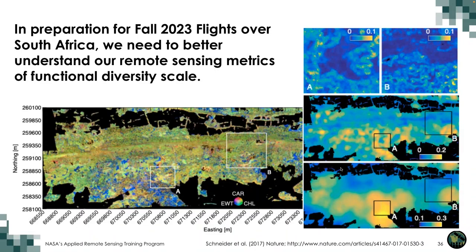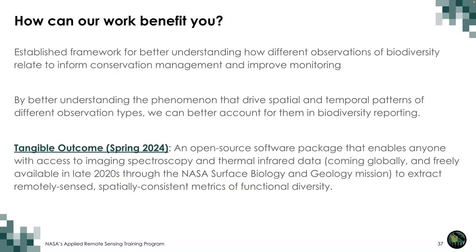In preparation for our fall 2023 flights over South Africa, we are performing analyses to better understand remote sensing metrics of functional diversity across scales. As shown in a 2017 Nature paper, the resolution and scale at which metrics are calculated can produce very different values of functional richness, divergence, and evenness. We are conducting spatial covariance analyses — accounting for topography and community-level factors — to standardize these metrics so biodiversity measures are comparable across locations independent of the scale at which they were calculated.